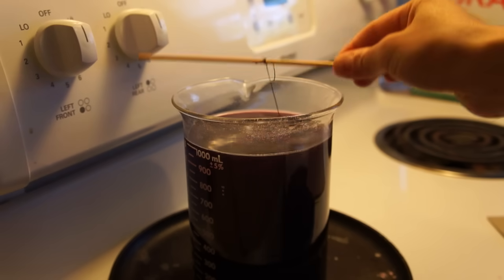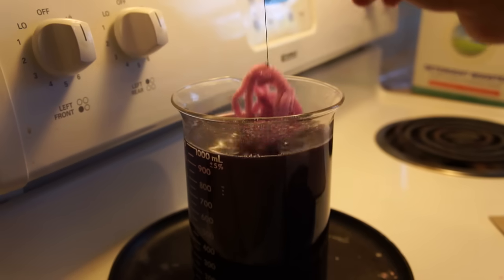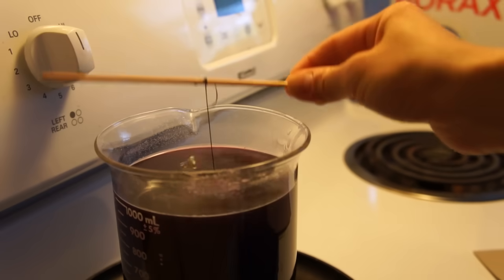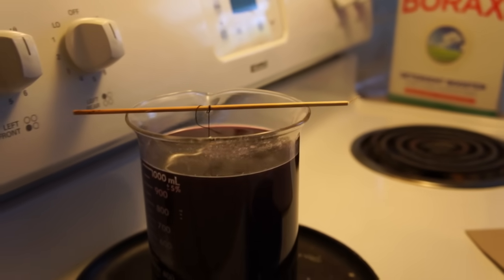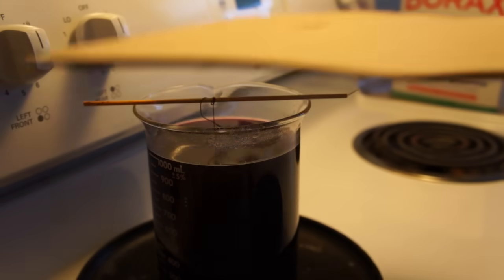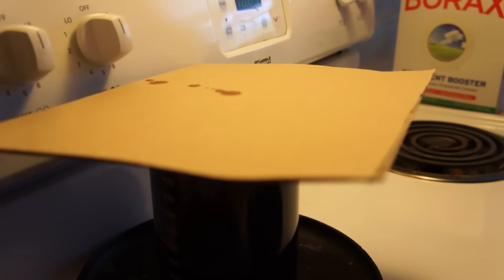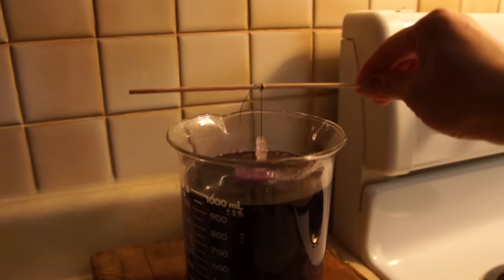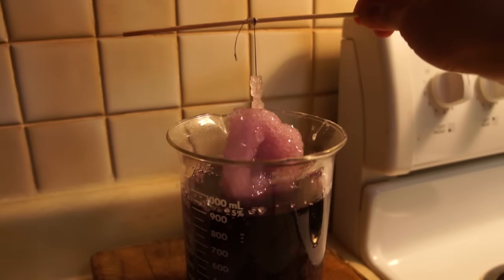Next you're going to attach your pipe cleaner to a bamboo skewer and then dunk the whole thing into your solution while it's still hot. Then cover the whole thing with a piece of cardboard and allow it to sit at least 8 hours or overnight. So 12 hours later, this is what I got. A beautiful crystal.